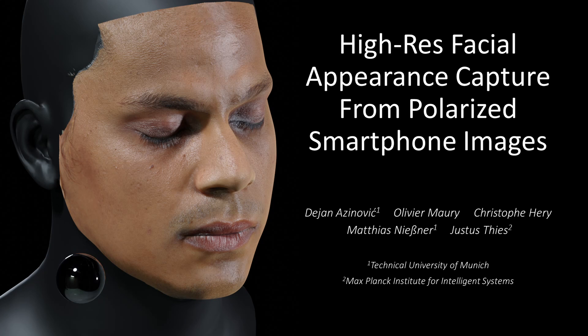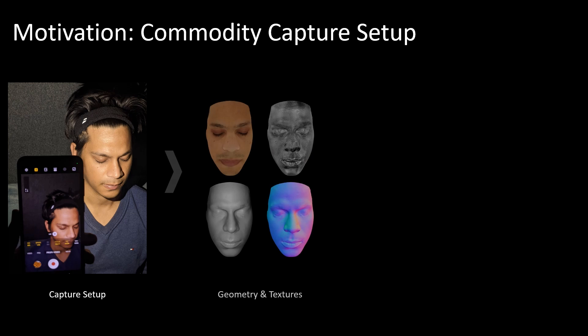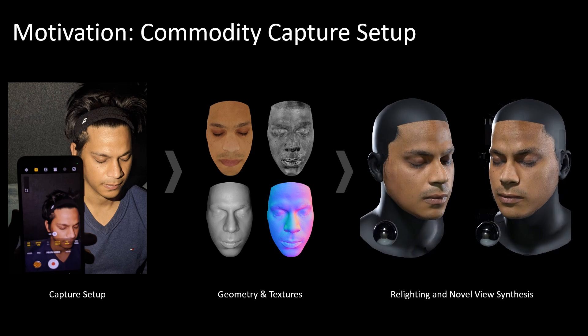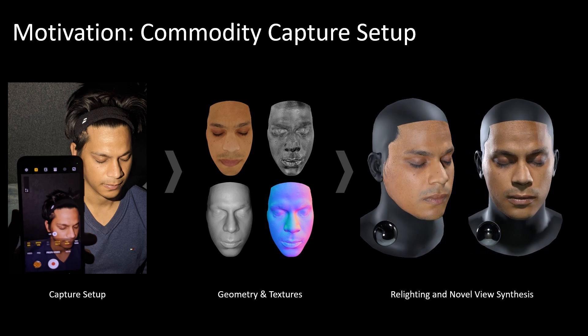We present a novel method for high-resolution face appearance capture from polarized smartphone images. We propose a new capture setup consisting of a smartphone and inexpensive polarization foils to reconstruct high-quality geometry and appearance textures of human faces in a home capture scenario. The output of our method can be used in standard rendering frameworks to produce photorealistic relighting imagery.